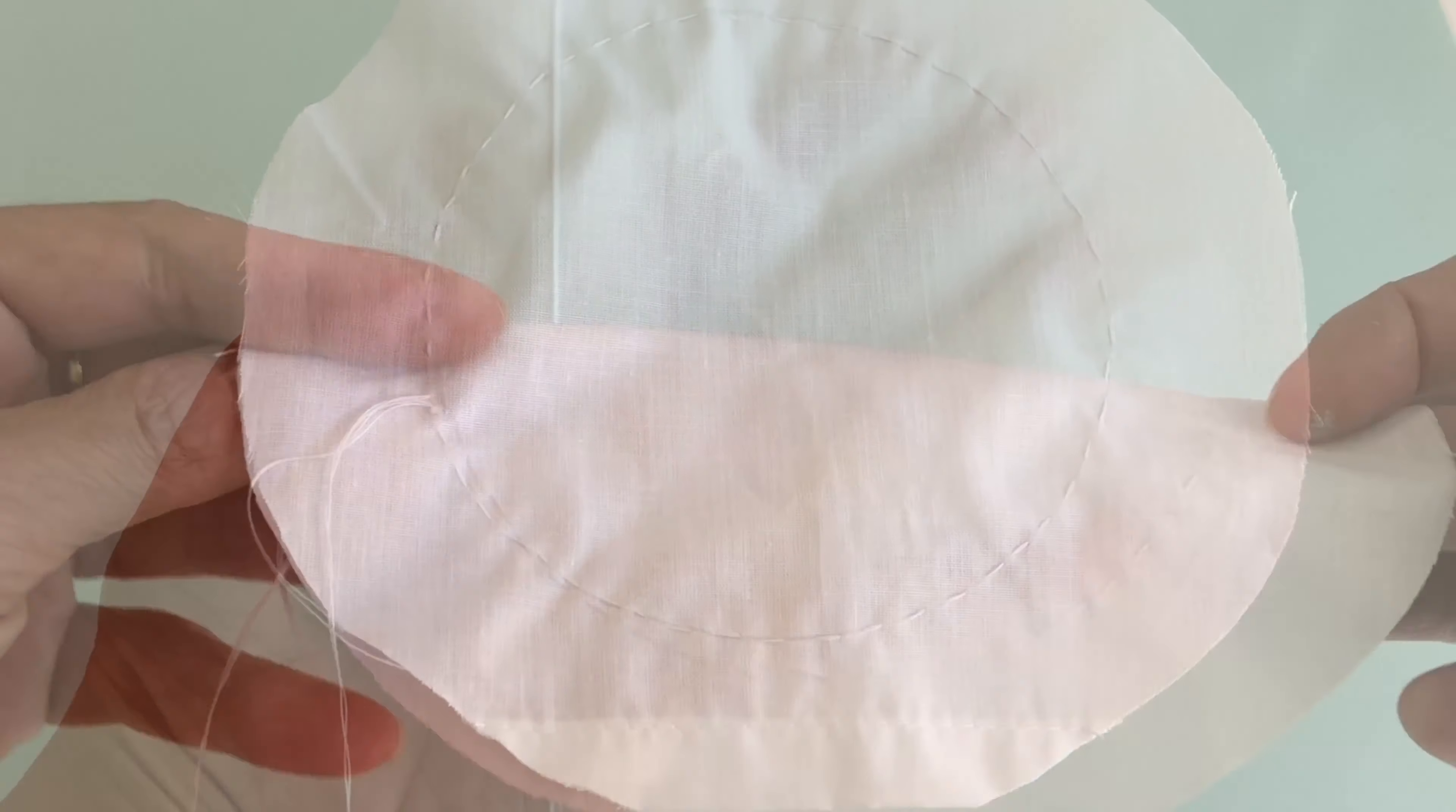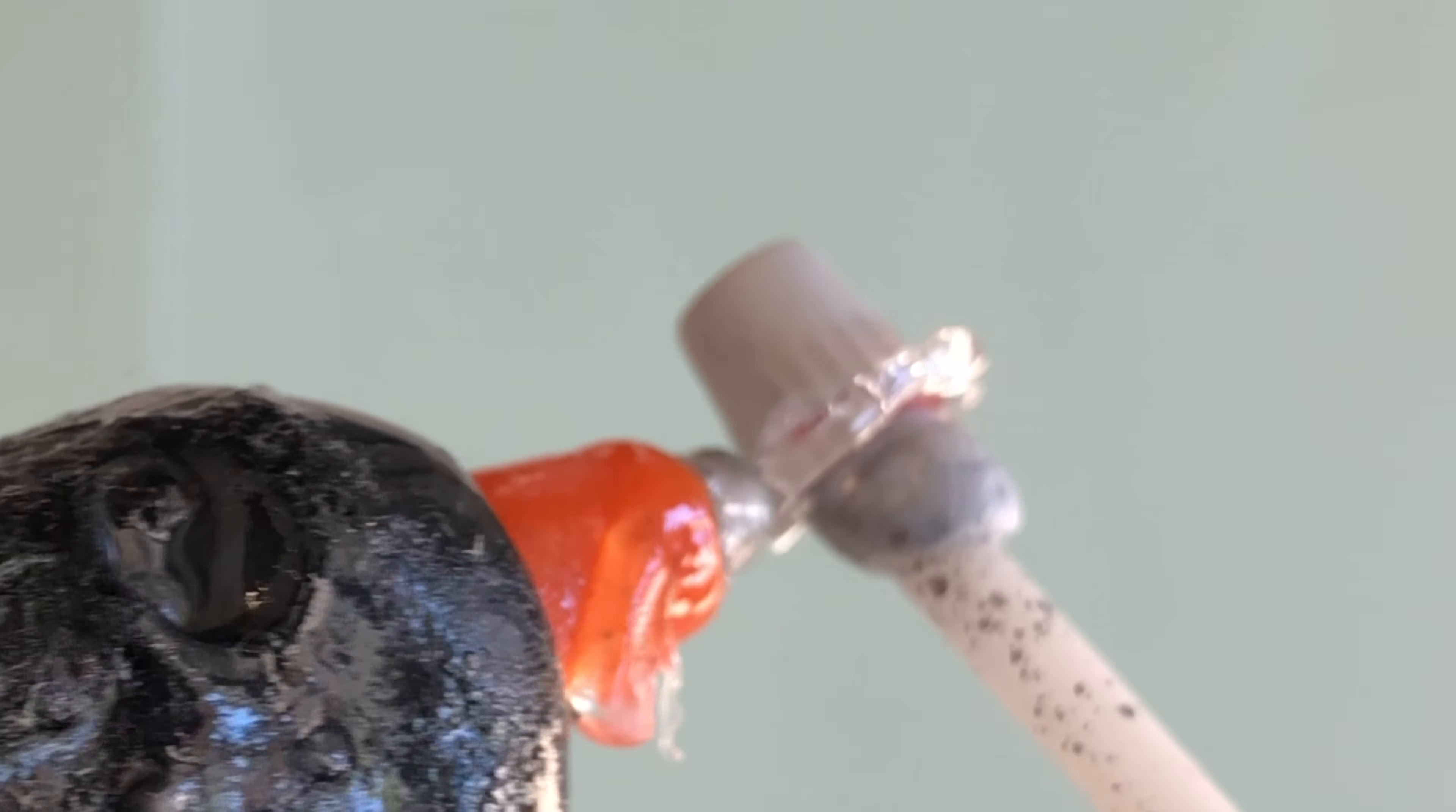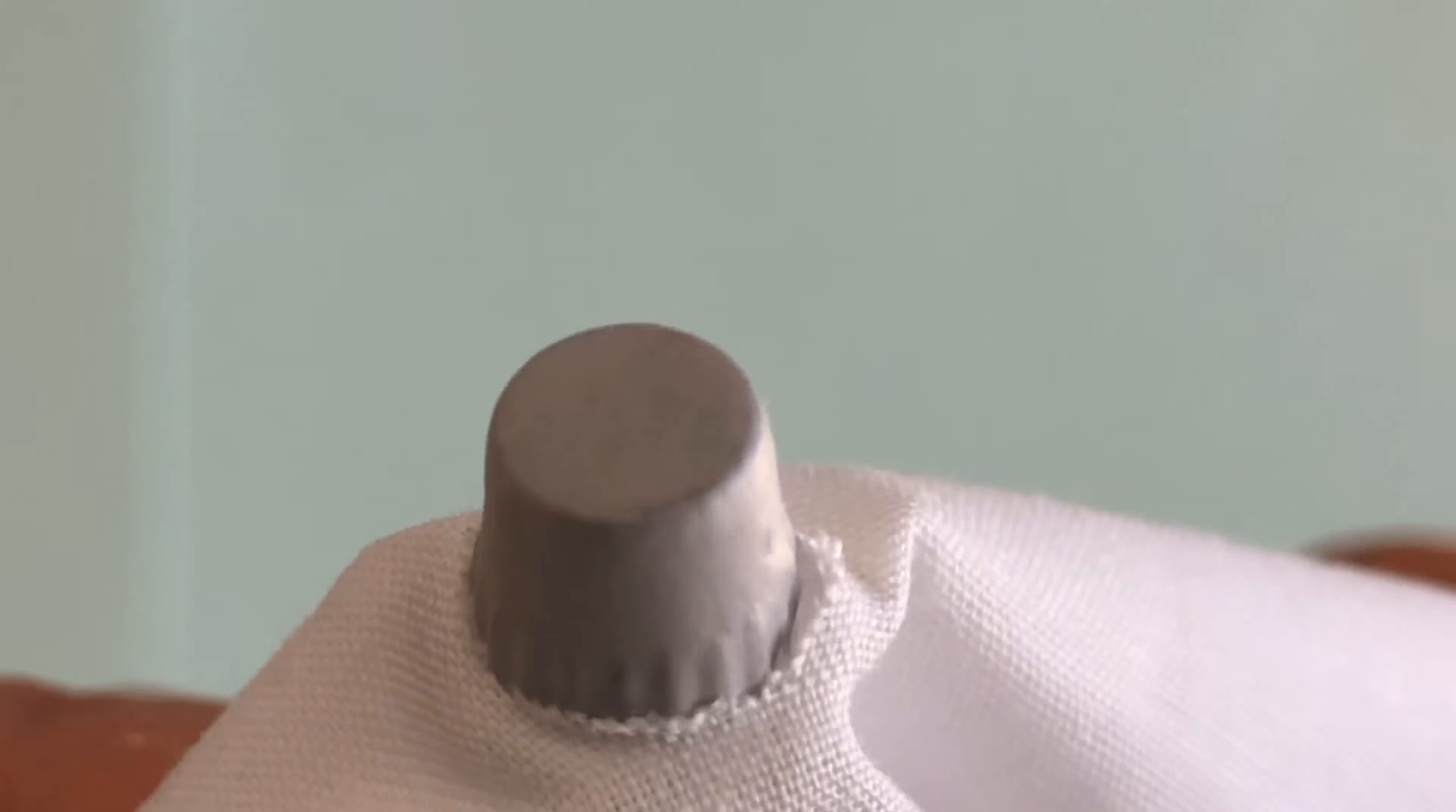Fold your fabric into half, then into quarters. Cut just a tiny piece from the top corner. To attach the piping tip, put hot glue around the base of your cap. Push the cap through the hole in your fabric circle.